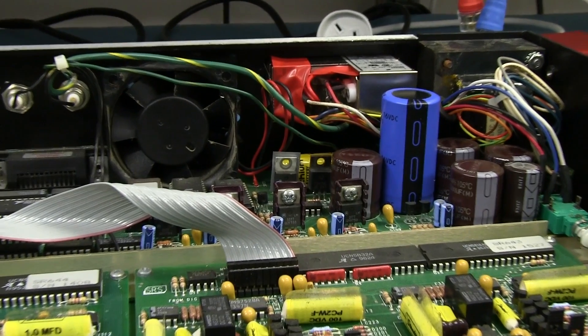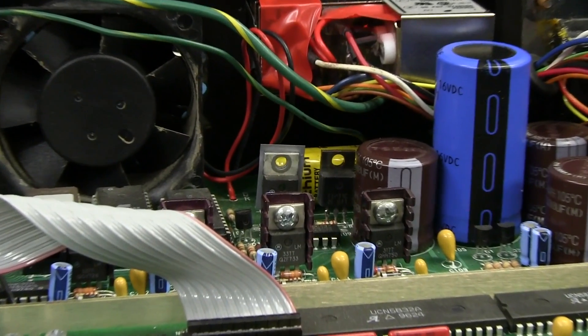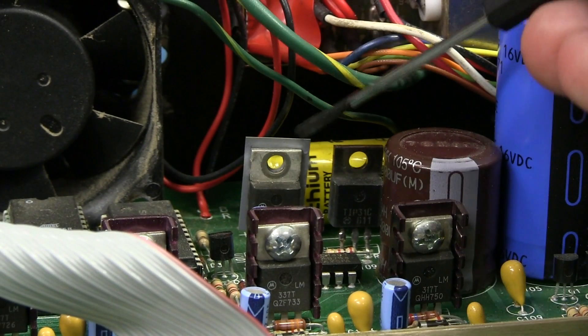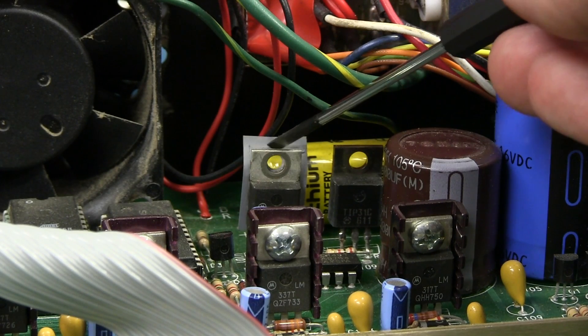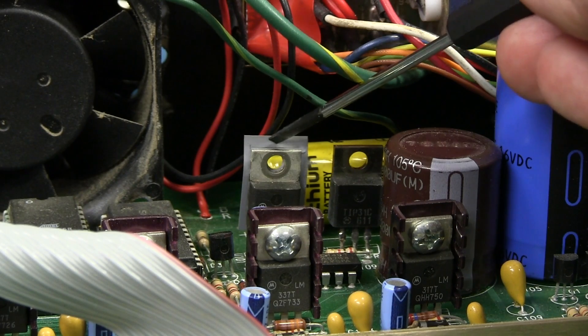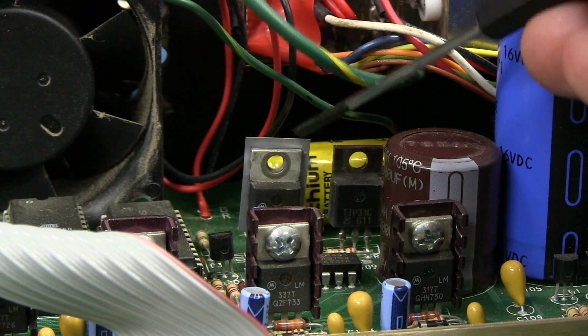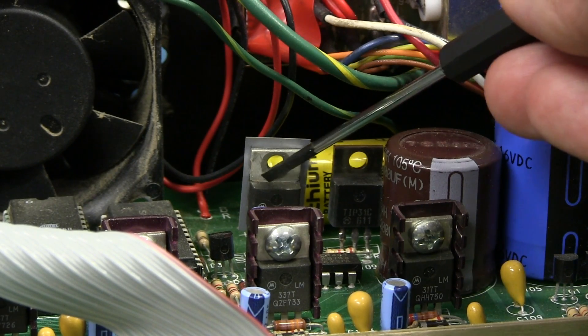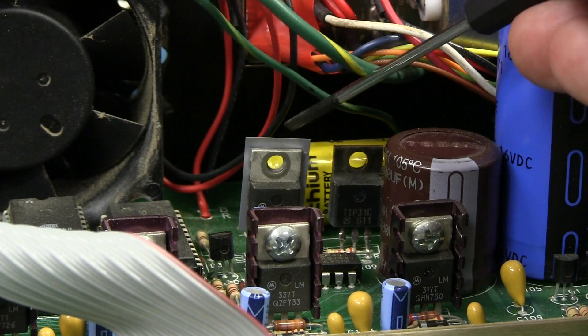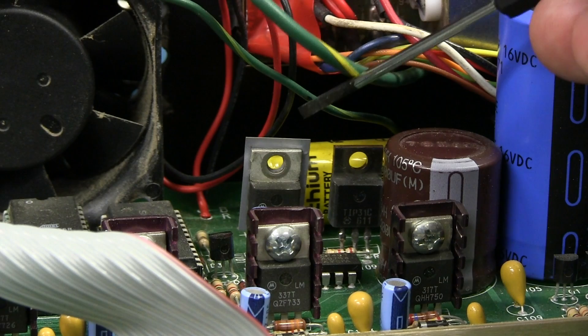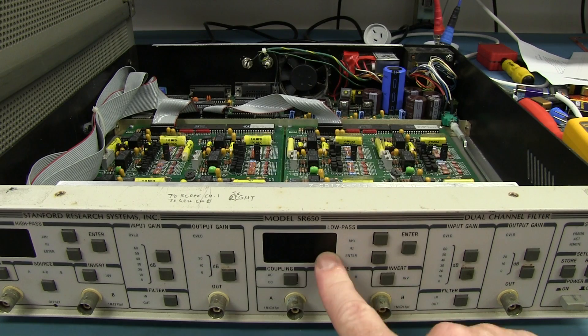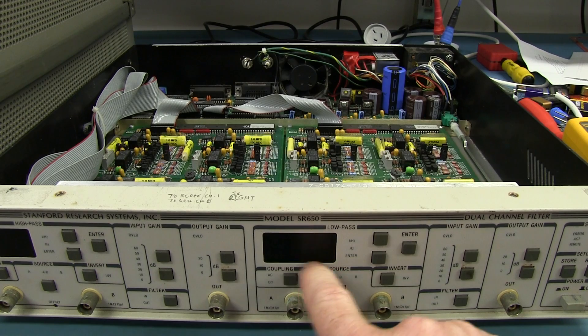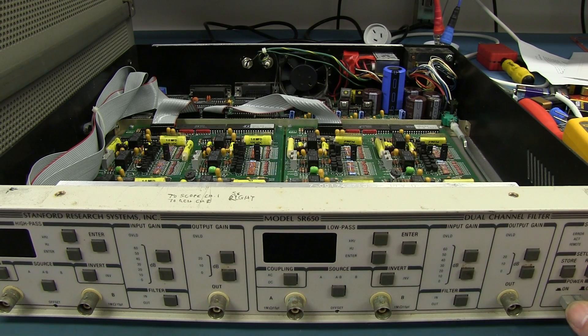Now one thing I noticed, and also a few eagle-eyed viewers noticed this as well, check out this regulator in the back here. It's a 7805 5-volt regulator. It's got a sil pad on it, one of those insulating sil pads, but there's no matching heatsink. And it looks like it's had the screw in there, so somebody has taken that heatsink off at some point. Why?